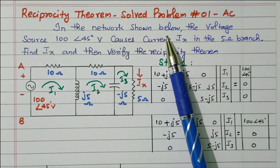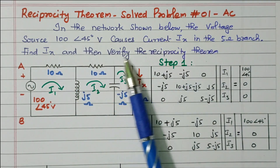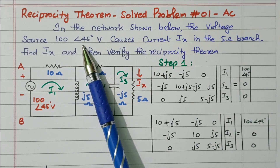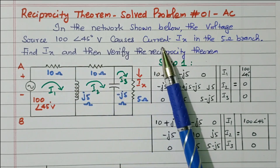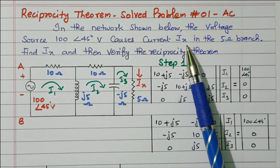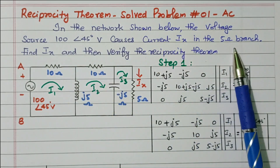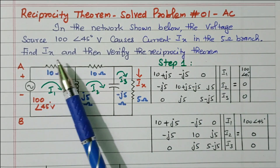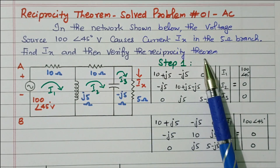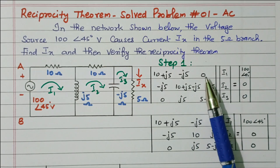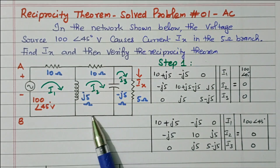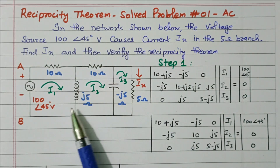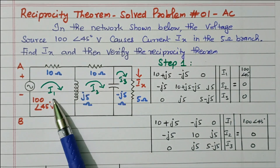In the network shown below, the voltage source 100 volts with angle 45 degrees causes current IX in the 5 ohm branch. Find the IX value and verify the reciprocity theorem. The network is given; there are three branches and three loops available.